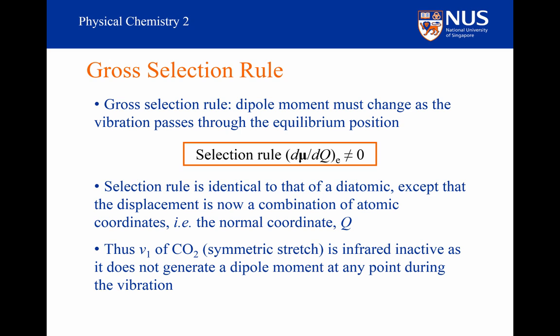Thus ν₁ of carbon dioxide, the symmetric stretch, is infrared inactive as it does not generate a dipole moment at any point during the vibration. This explains why there are only two vibrational bands in the infrared spectrum of carbon dioxide rather than four: one is missing because the two bending modes are degenerate, and a second is missing because the symmetric stretch is infrared inactive.